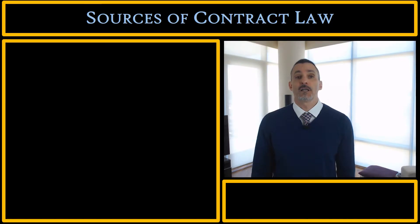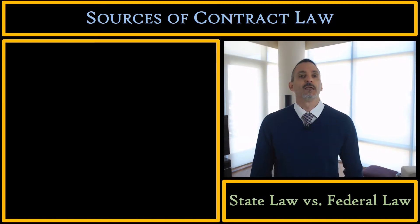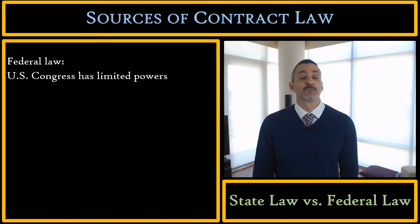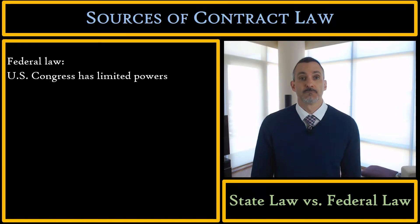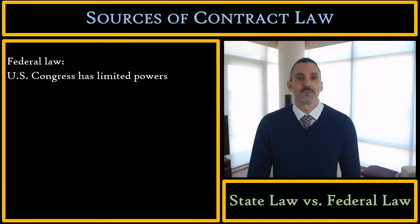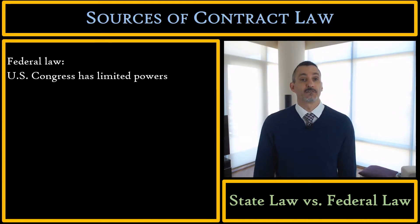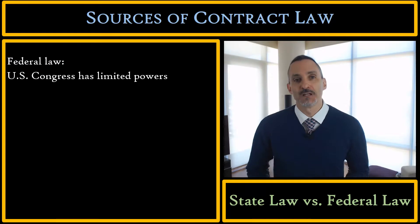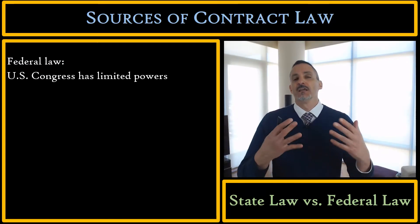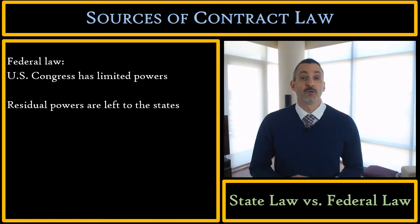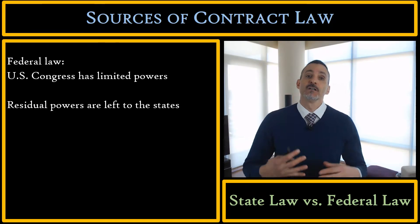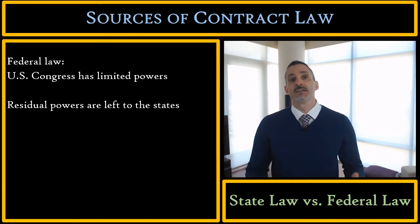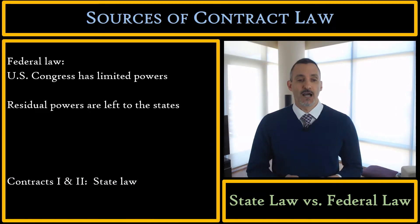Let's begin our discussion by talking about the difference between federal law and state law, and why in our course we're going to focus mostly on the state law of contracts. Under federal law, under the U.S. Constitution, Congress is a Congress of limited powers. Congress cannot regulate every aspect of your life or every aspect of the economy. Anything that Congress cannot do under the Constitution, the powers are reserved to the states. And in this case, states are the main source of contract law.